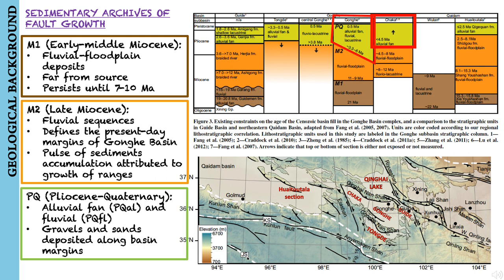On the flanks of the Gonghe-Nanshan, the uppermost 500 meters of the section consists of coarse alluvial fan and fluvial conglomerates, some of which are associated with the axial Yellow River, and this strata dates to around 7 to 0.5 million years ago.